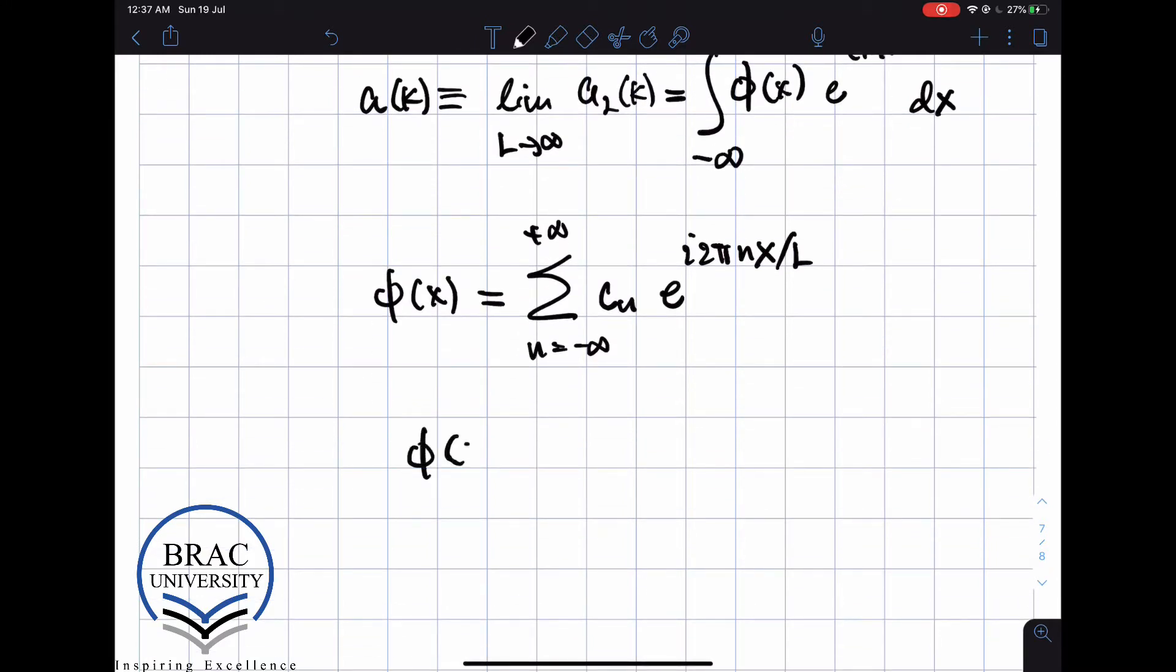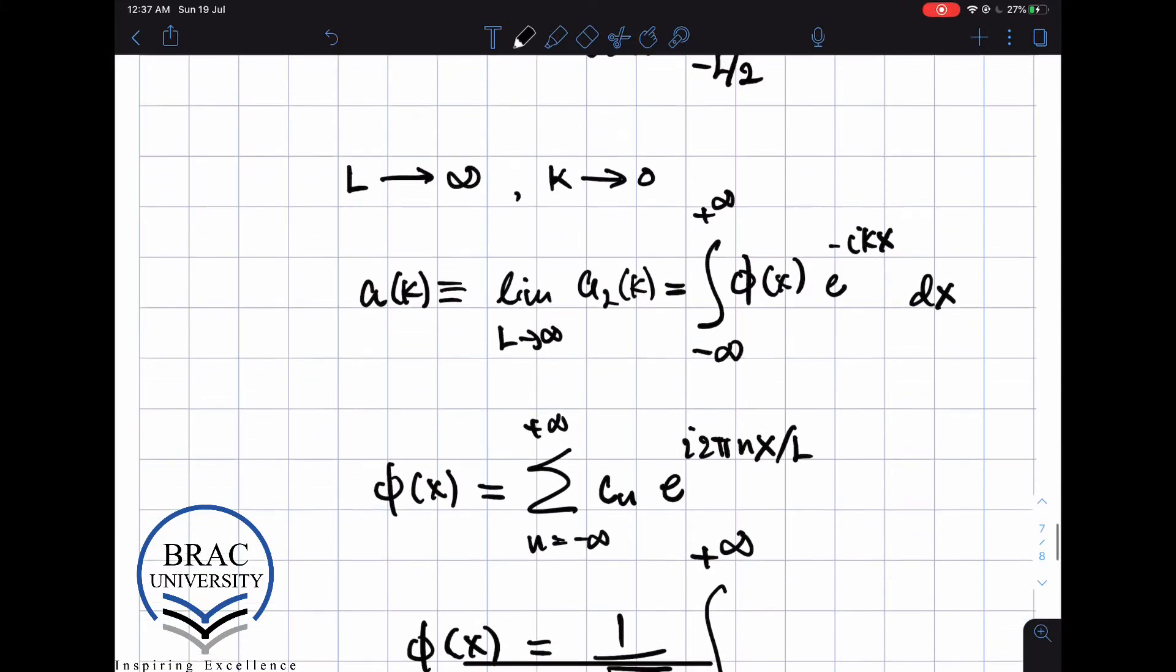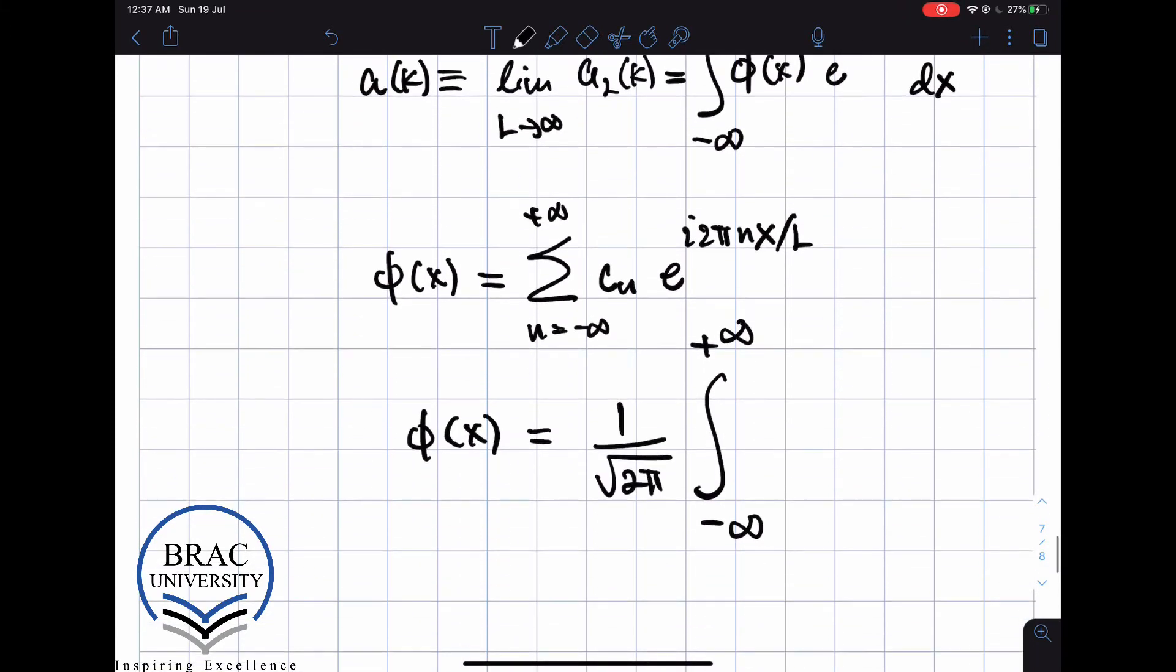φ(x) becomes 1/(2π), an integral from minus infinity to plus infinity. And the c_n is replaced by a_n, and this becomes a(k), and the exponential becomes plus ikx. And now the sum is going to become dk.